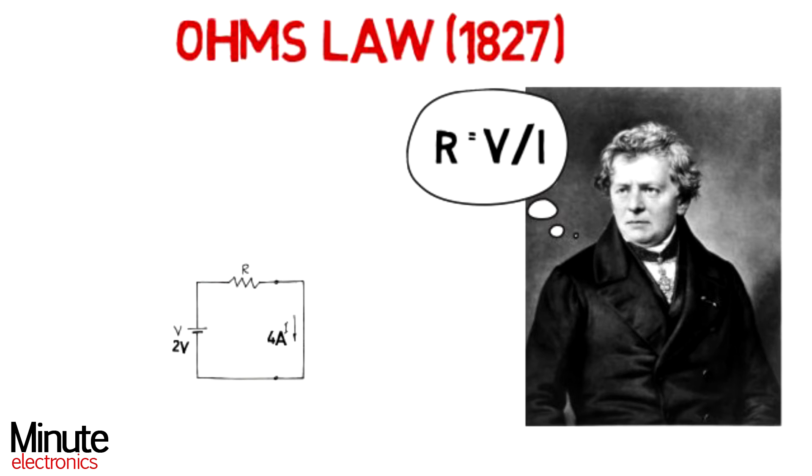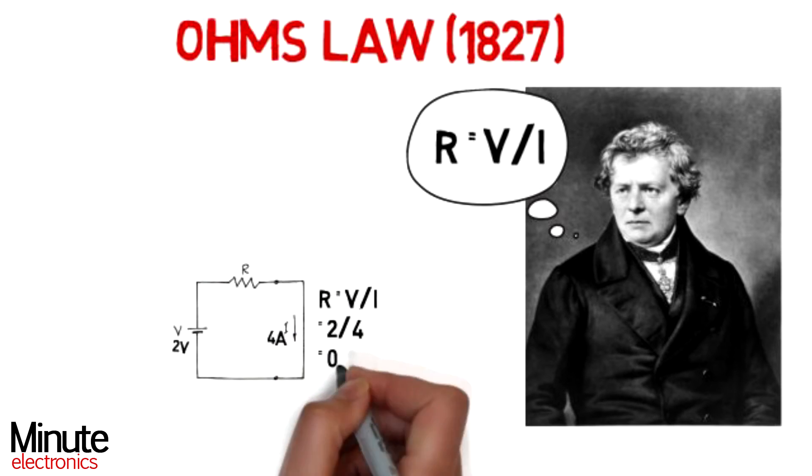The voltage source produces a current that is limited by the resistor. If voltage is equal to 2 volts and current is equal to 4 amperes, then what should be the resistance of the resistor? Simple, resistance is given by voltage upon current, therefore 2 by 4, that is 0.5 ohms.